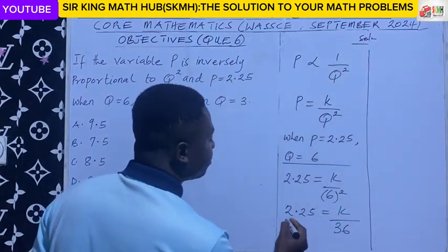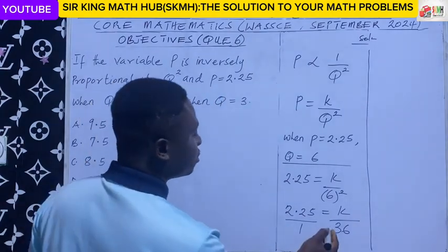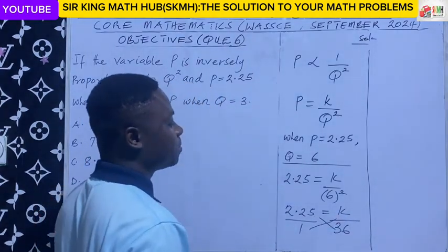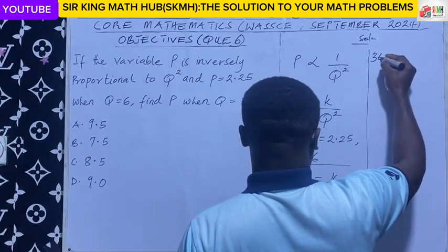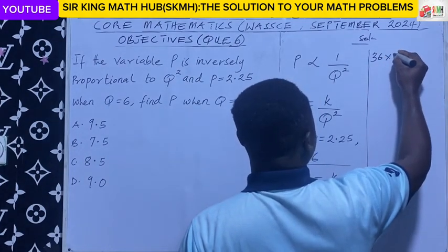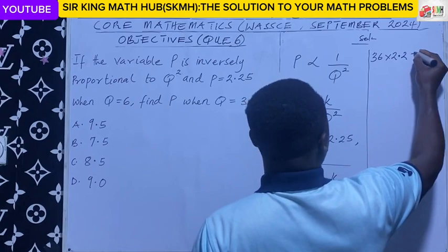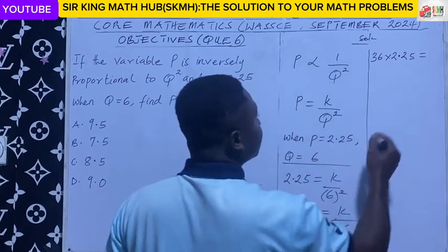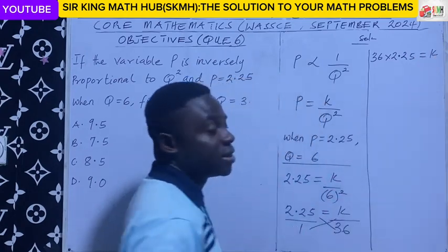So now, 2.25 can be written as 2.25 on 1. So we can do the cross-multiplication. So we have 36 times 2.25. This should be equal to 1 times k, which is k.